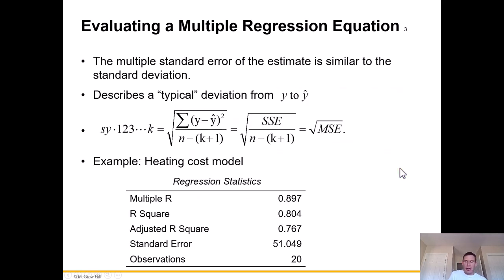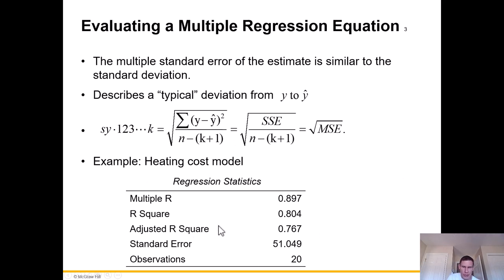The multiple standard error of the estimate is similar to the standard deviation — it describes a typical deviation from y to y prime. Think of it as the square root of the mean square error. For the heating cost model, looking at the regression statistics: multiple R, R squared, adjusted R squared of 0.767, and a standard error of just over 51, based on those 20 observations.